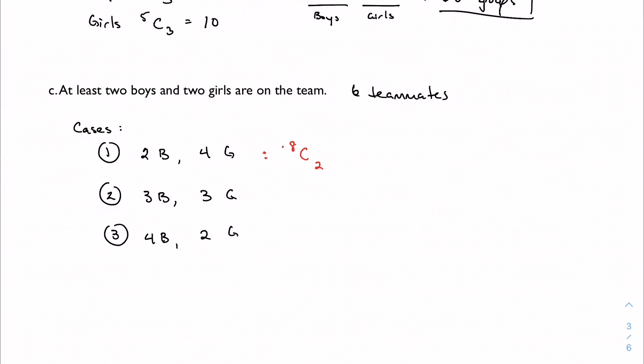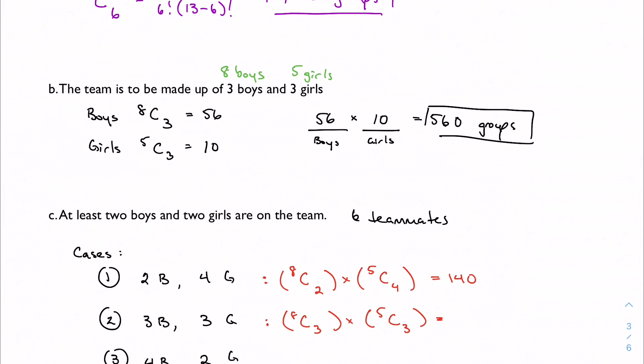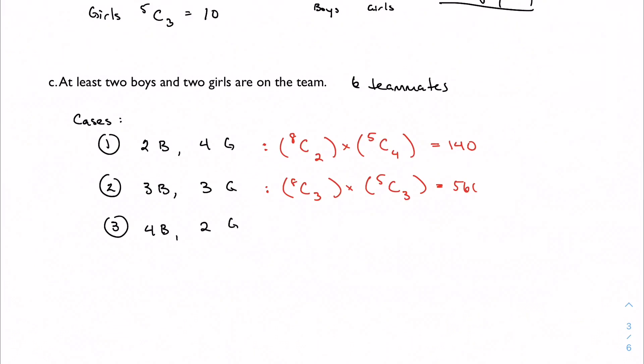And in these three cases, we can work just the way we did above. From 8 boys, I want to choose 2 of them. And from 5 girls, I want to choose 4 of them. Let me do this real quick. I'm just going to come right up with the final answer here. I get 140 possible groupings that way. I'm going to repeat this process now with 3 boys and 3 girls. So from 8 boys, I want to choose 3 of them. And from 5 girls, I want to choose 3 of them. And actually, that's what I just did up here. So we already know that this number is 560.